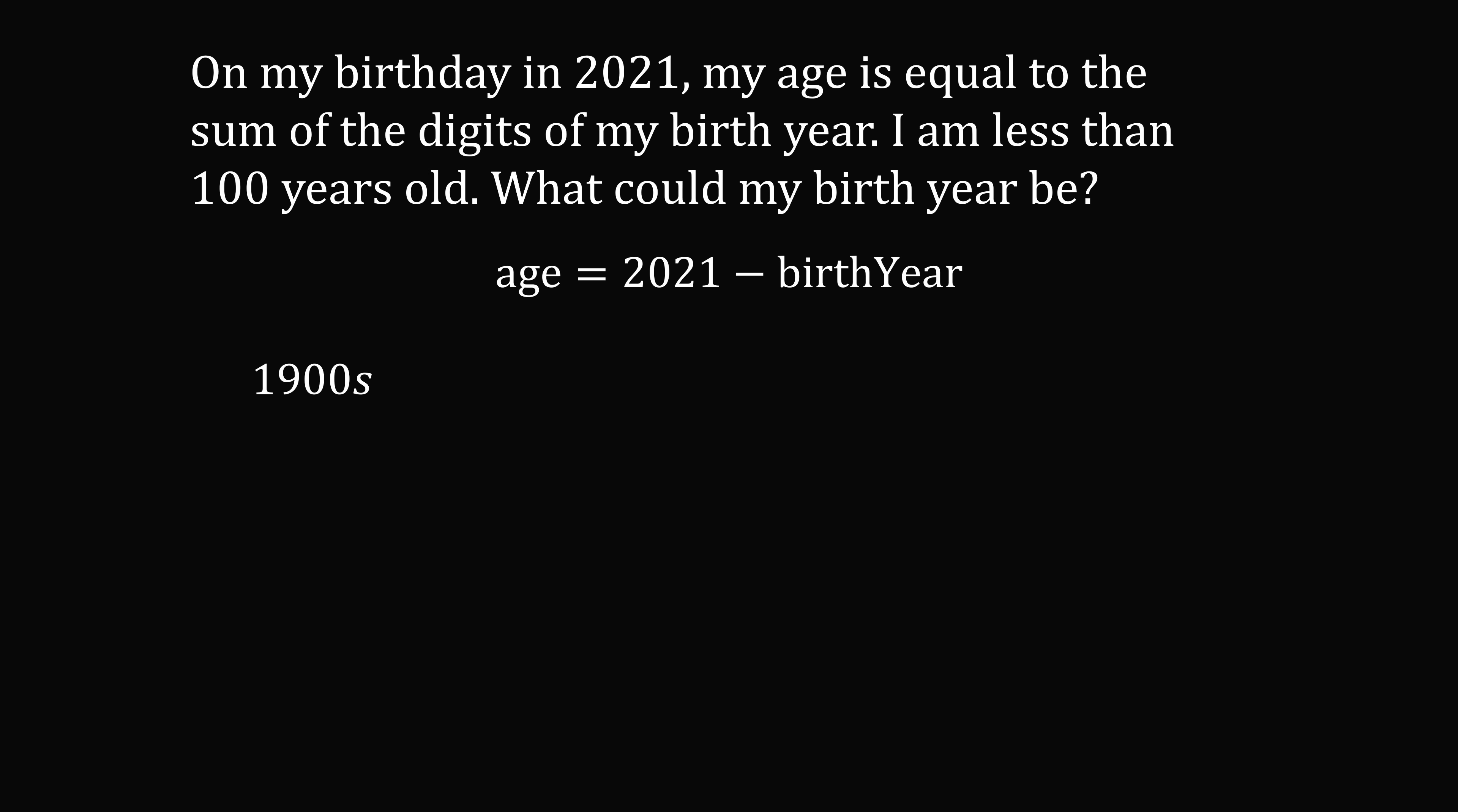Let's say you were born in the 1900s. Then your age is equal to 2021 minus 19ab. But this is also equal to the sum of the digits of your birth year, and that will be equal to 1 plus 9 plus a plus b. If instead you were born in the 2000s, your age would be equal to 2021 minus 20ab, and the sum of the digits of your birth year will be equal to 2 plus a plus b. So, let's work out each case in turn.